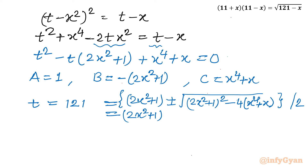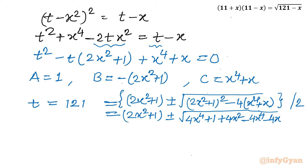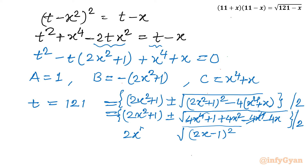Now let us simplify the discriminant. Expanding (2x² + 1)² gives 4x⁴ + 1 + 4x². Subtracting 4(x⁴ + x) leaves 4x⁴ + 1 + 4x² − 4x⁴ − 4x = 4x² − 4x + 1. This is a perfect square: (2x − 1)². So the square root and square cancel nicely — this is the advantage of the substitution approach.